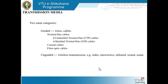Under transmission media, if wired we have two categories: guided, where we have wires and cables, and unguided, where we have wireless transmission. Under guided we have TDM cables — most LAN cables are called twisted pair cables: UTP (Unshielded Twisted Pair) and STP (Shielded Twisted Pair). The second type is coaxial cables, and the third is fiber optic cables. Each has a different data carrying capacity and speed, serving different purposes and applications. Unguided wireless transmission includes radio, microwave, infrared, sound, and sonar transmission systems.